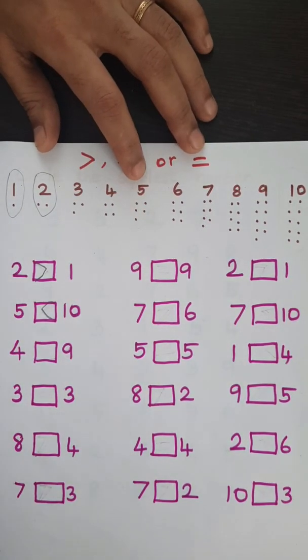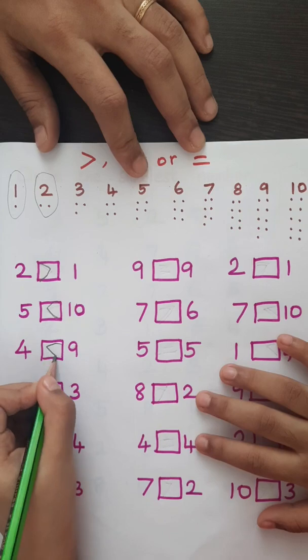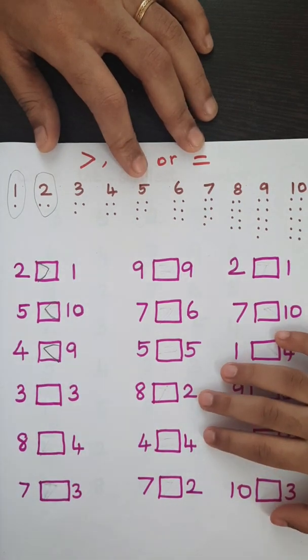Do the next one. 9. So, 9 is bigger. 4 is lesser.